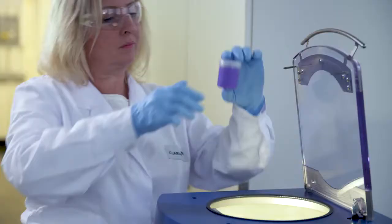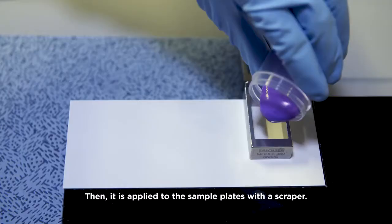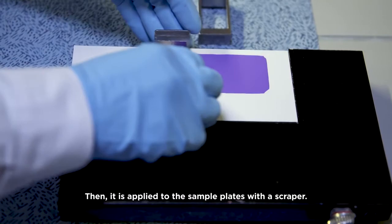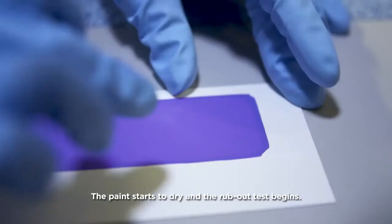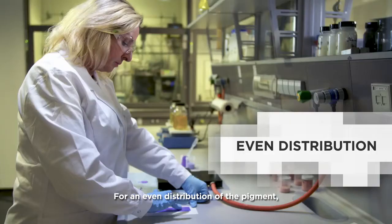Then it is applied to the sample plates with a scraper. The paint starts to dry and the rub-out test begins. For an even distribution of the pigment, thumbs or index fingers are used to rub circularly on the paint.